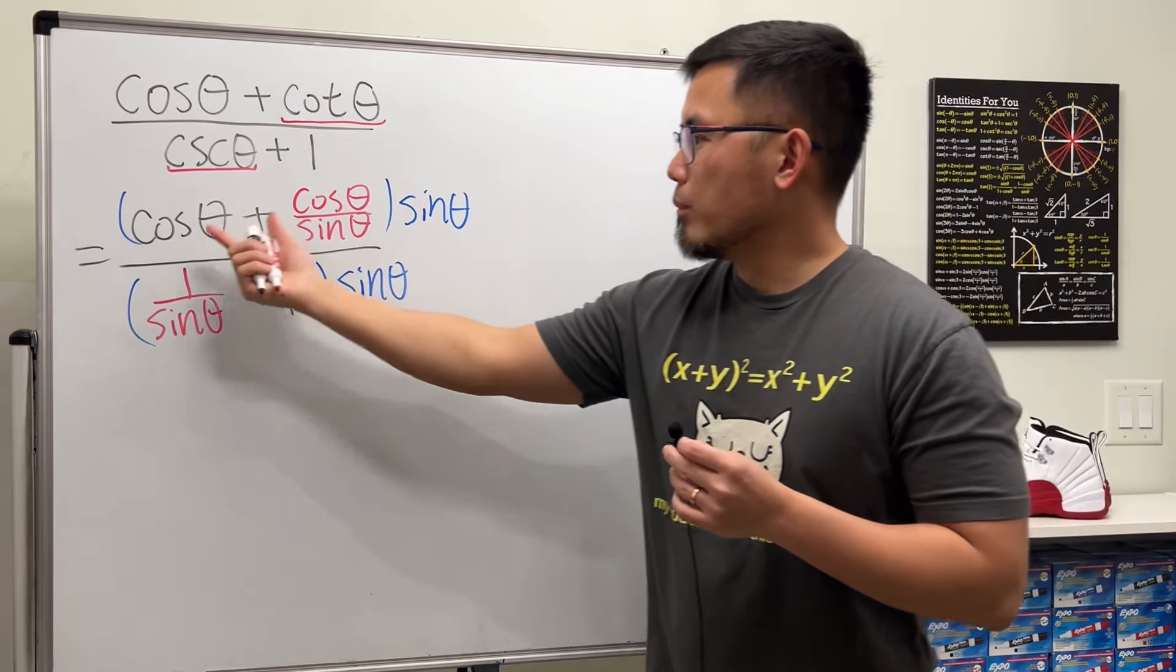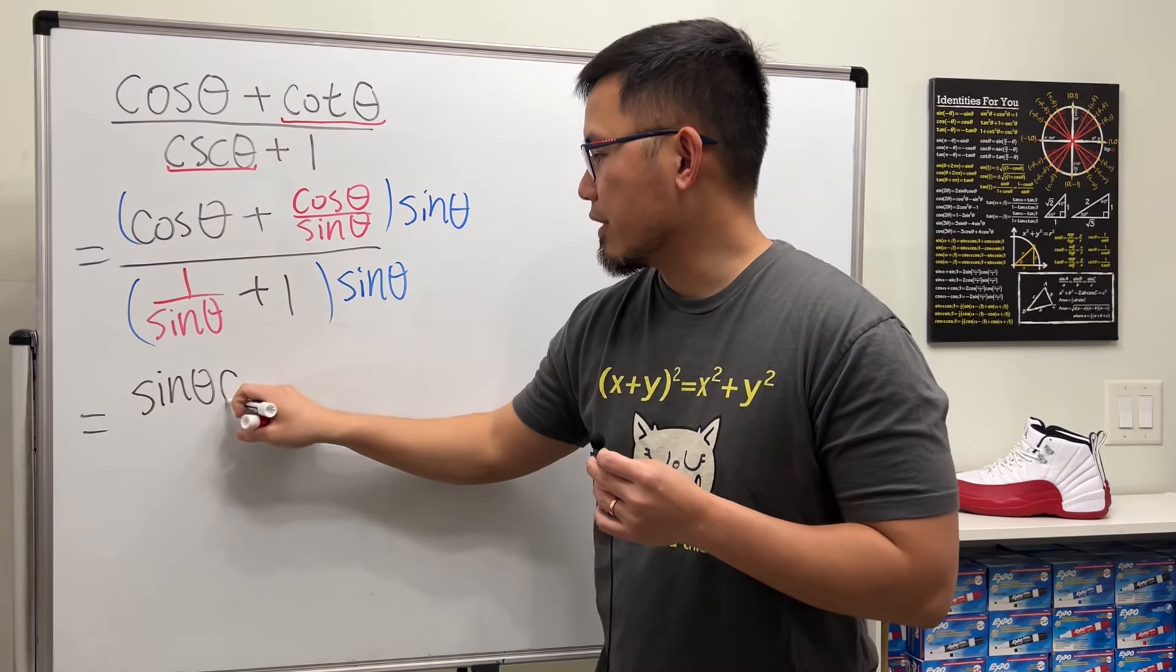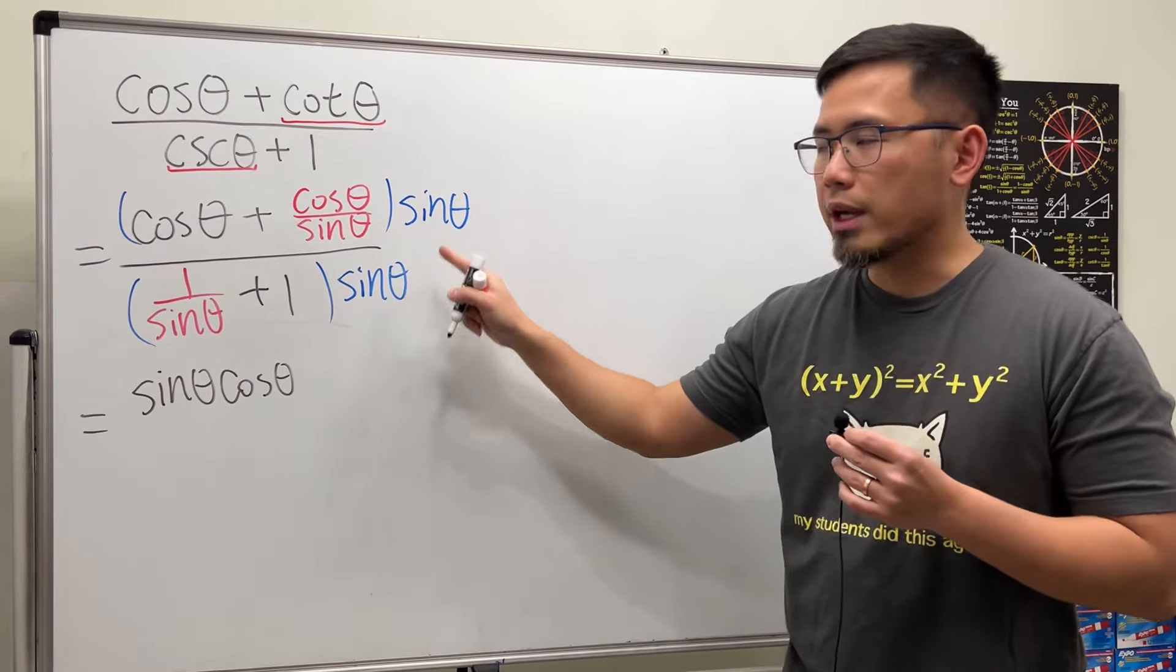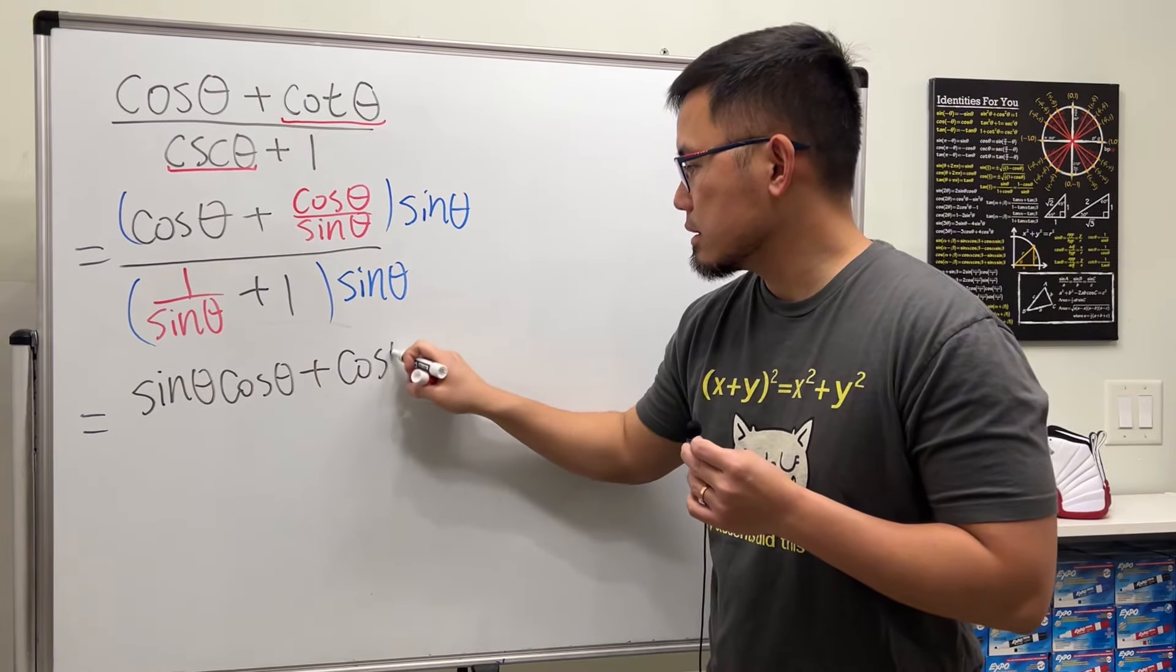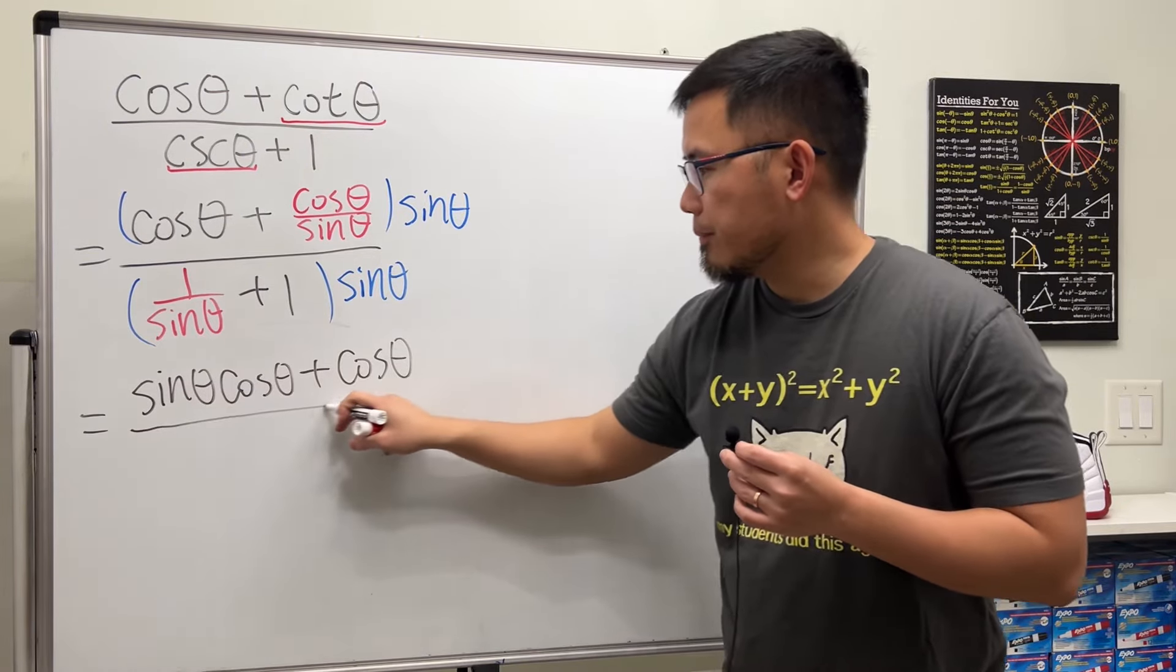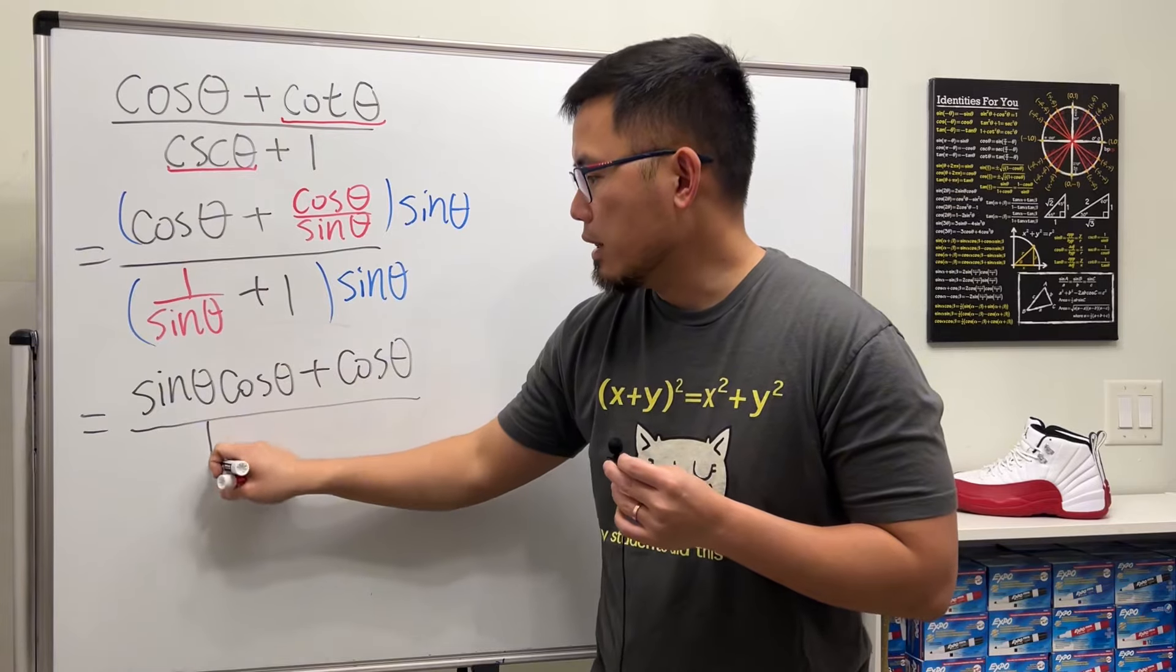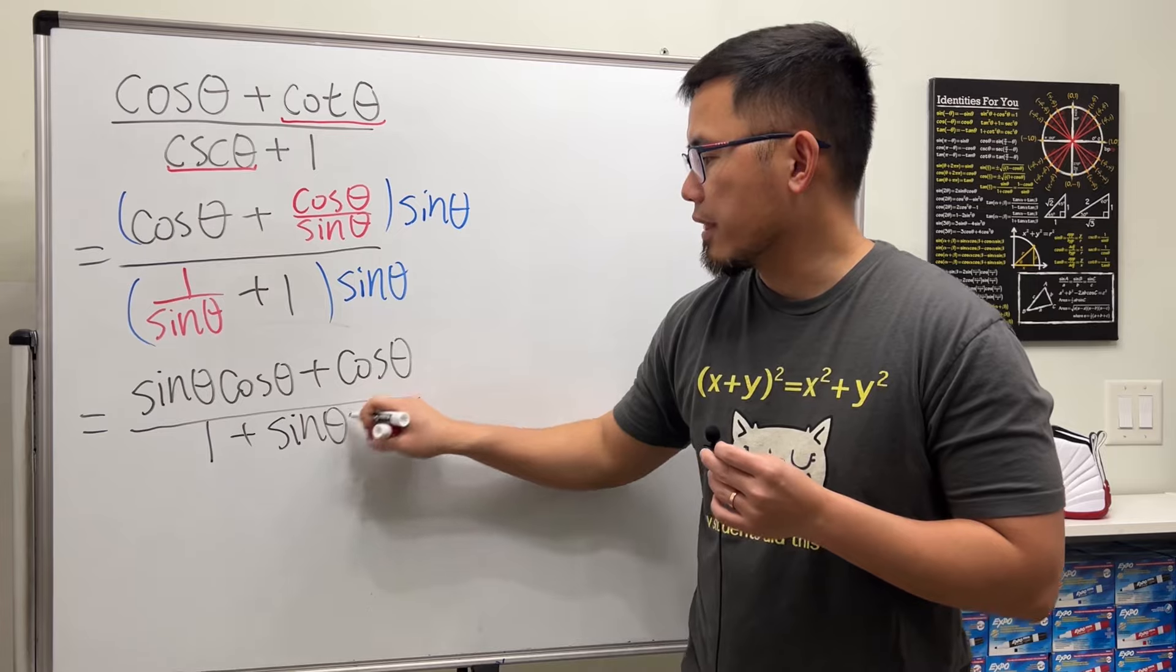Take this, multiply with that, we will get sine theta times cosine theta. Take this times that, sine theta will cancel. So we just add cosine theta over, take this times that, sine theta will cancel but we have a 1. And then plus sine theta times 1 is sine theta.